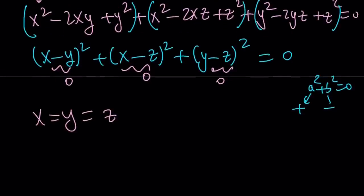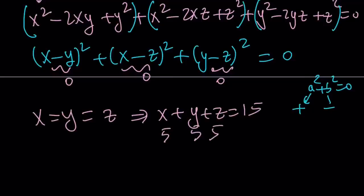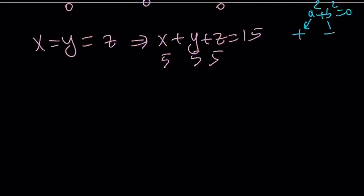So from here, you get the following. x equals y, y equals z, x equals z, which means x equals y equals z. And this is a very important result. So that's a really cool result. If they're all equal, then, and we know that their sum is 15, so each number is going to be 5, 5, and 5. And that is the end of the first method. Now, let's go ahead and talk about the second method.